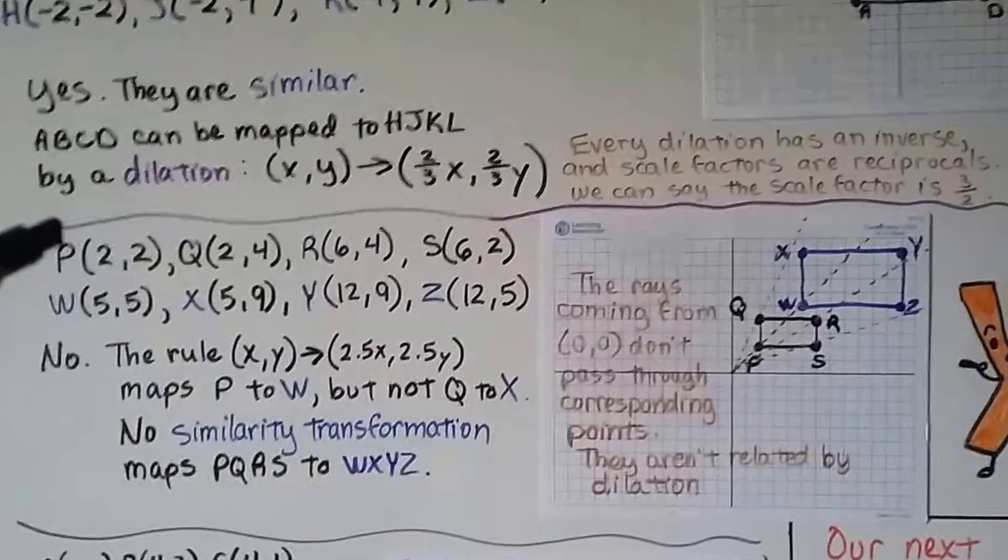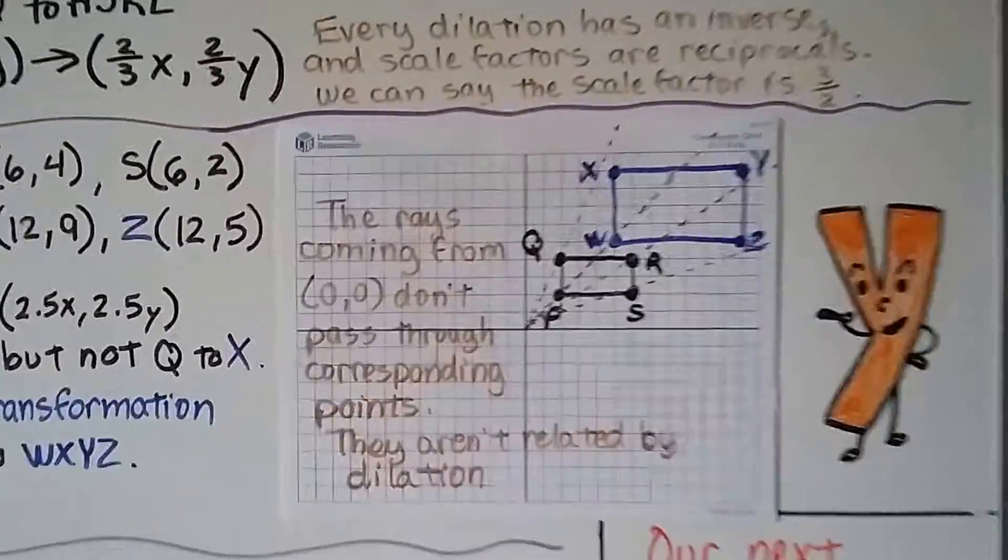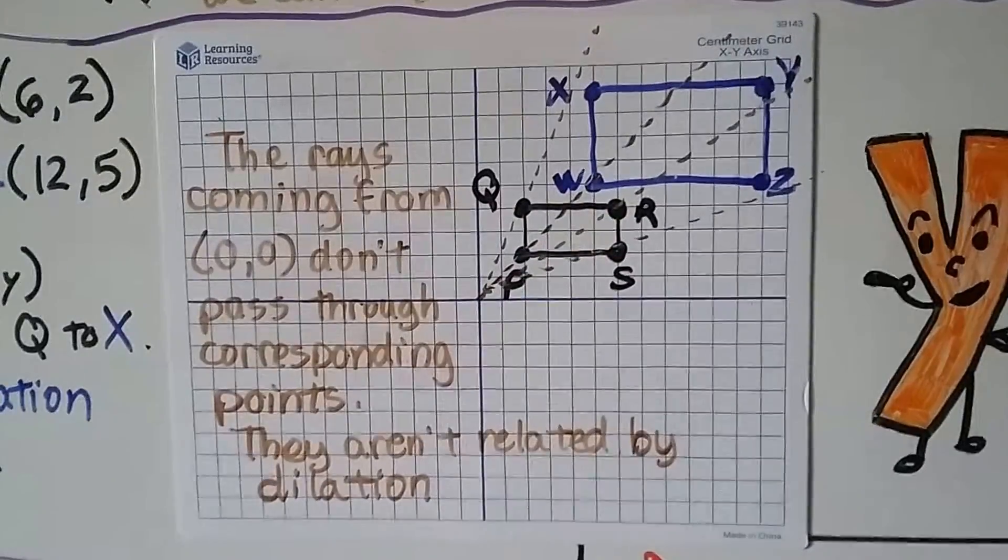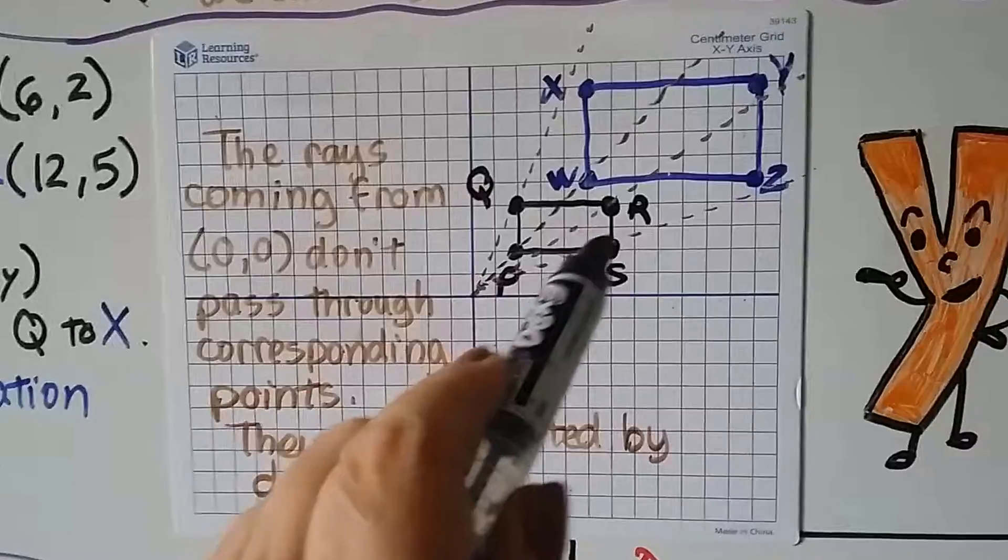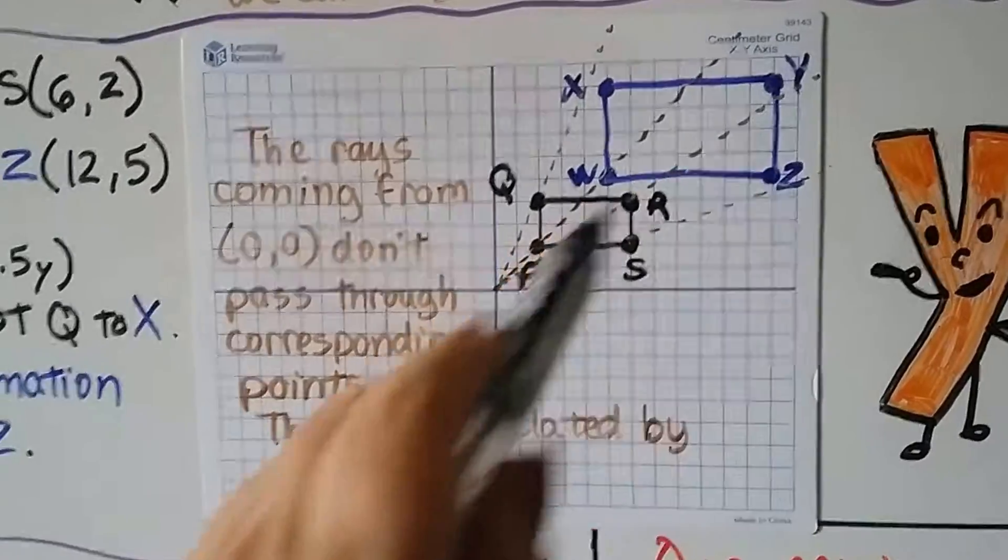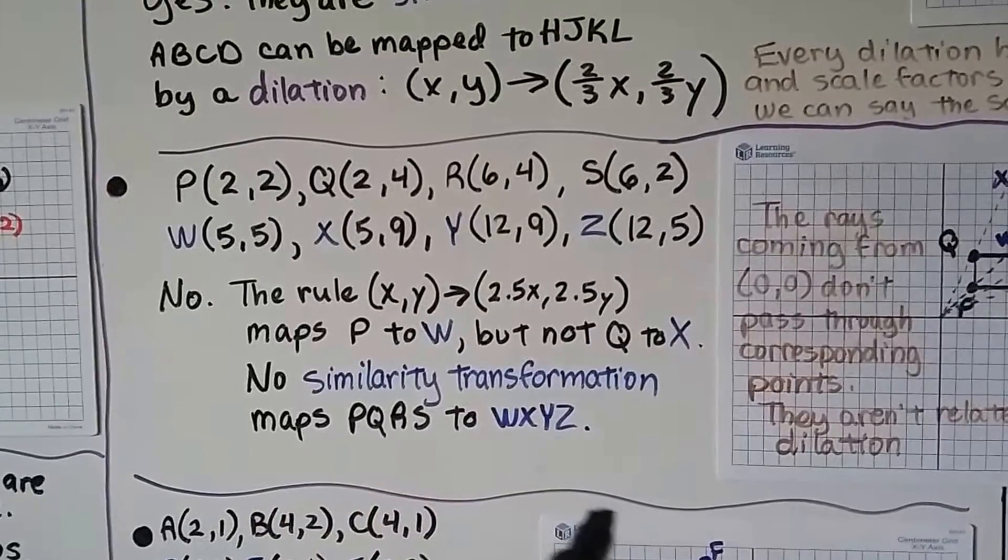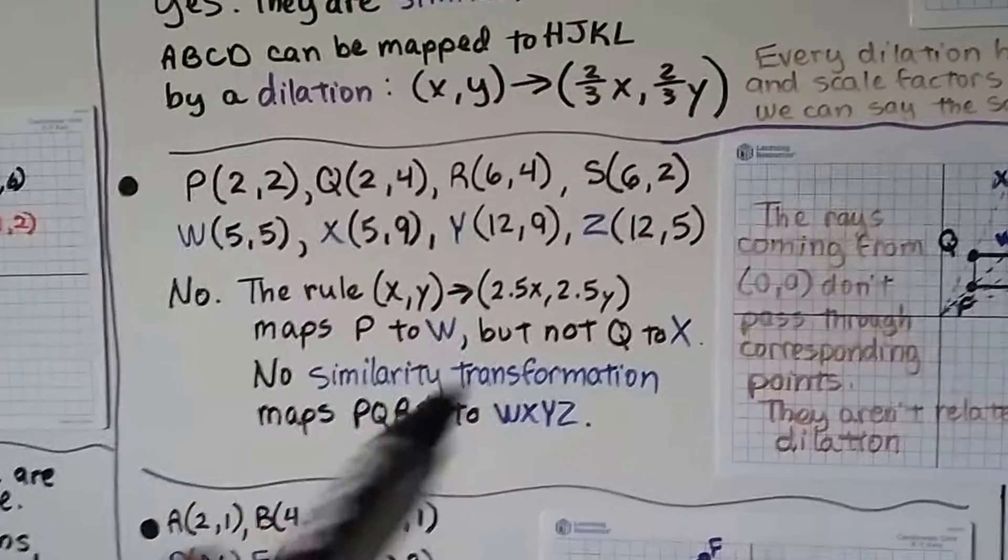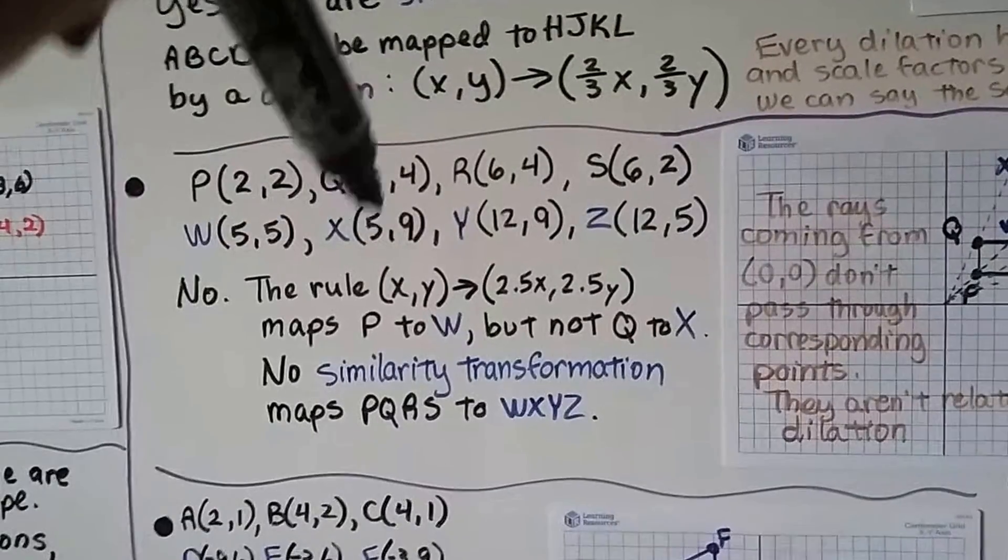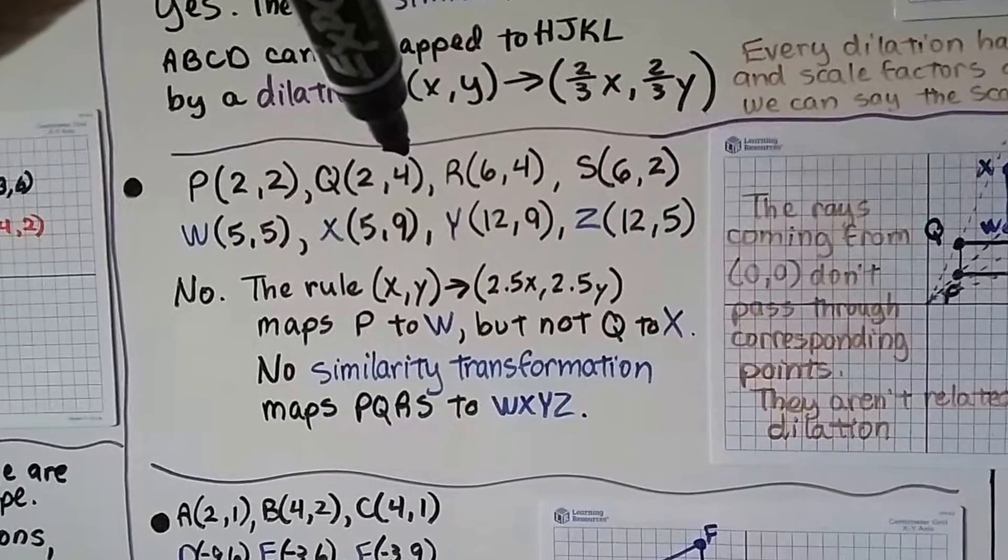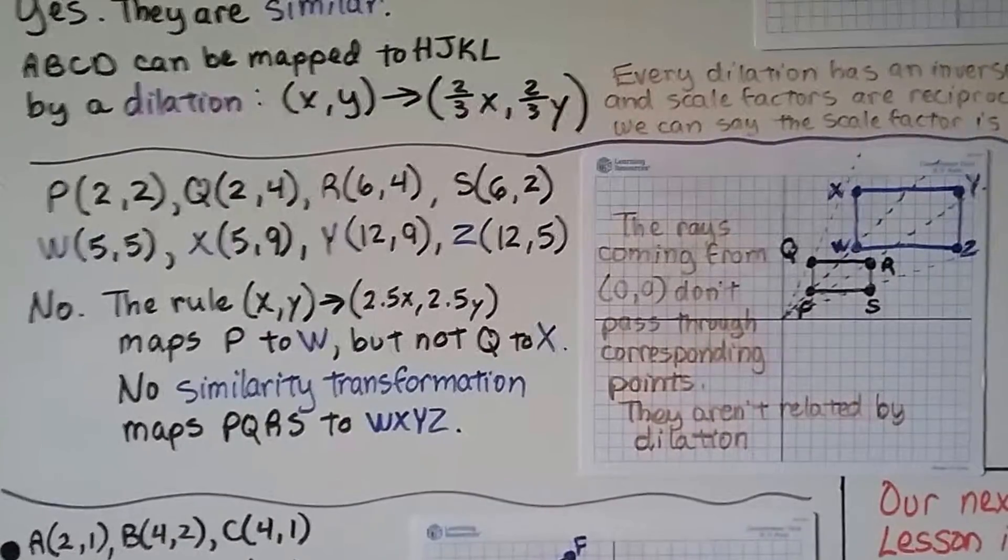Now let's take a look at this. We have P, Q, R, S, and we can plot the ordered pairs, and we have W, X, Y, Z, and we can plot the ordered pairs. But look what happens when we try to do our ray coming from the origin. They don't pass through corresponding points. They're not related by a dilation. When we go from the origin through Q, it does not go through X. When we go through the origin to S, it doesn't go through Z, and P doesn't go through W, and R doesn't go through Y. So no, the rule that the scale factor would be 2.5X and 2.5Y, so our scale factor is 2.5. It maps P to W, so 2 for X times 2.5 would get us to 5, and for Y it would get us to 5, and for the X values of Q and X it would work. But look what happens with Q and X when we go to the Y value. 4 times 2.5 is 10, not 9. So there's no similarity transformation that maps PQRS to WXYZ.